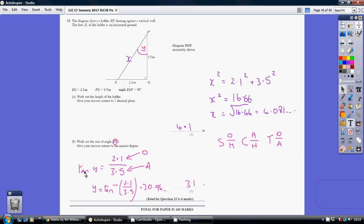So undoing the tan from both sides, we've got y equaling inverse tan 2.1 over 3.5. Pop that into your calculator, making sure your calculator is in degrees mode. Gives you this, and then to the nearest degree, that is 31 degrees.